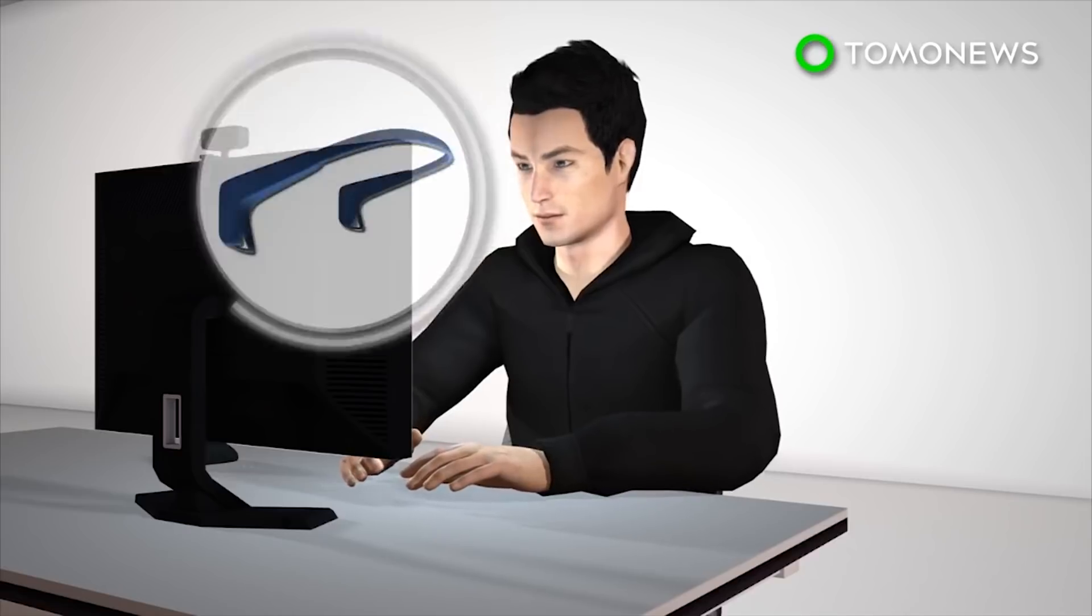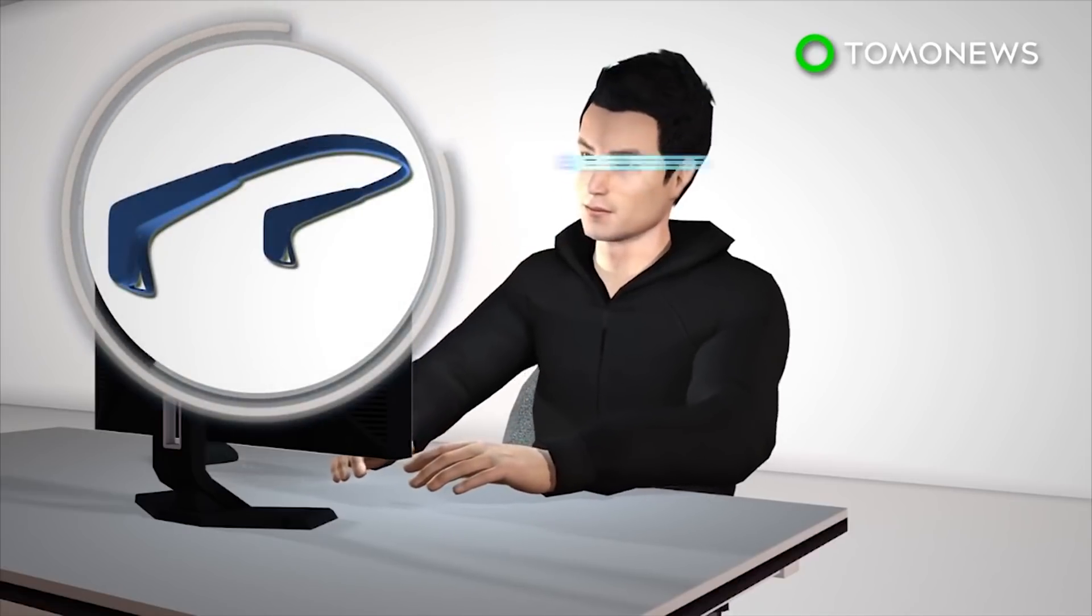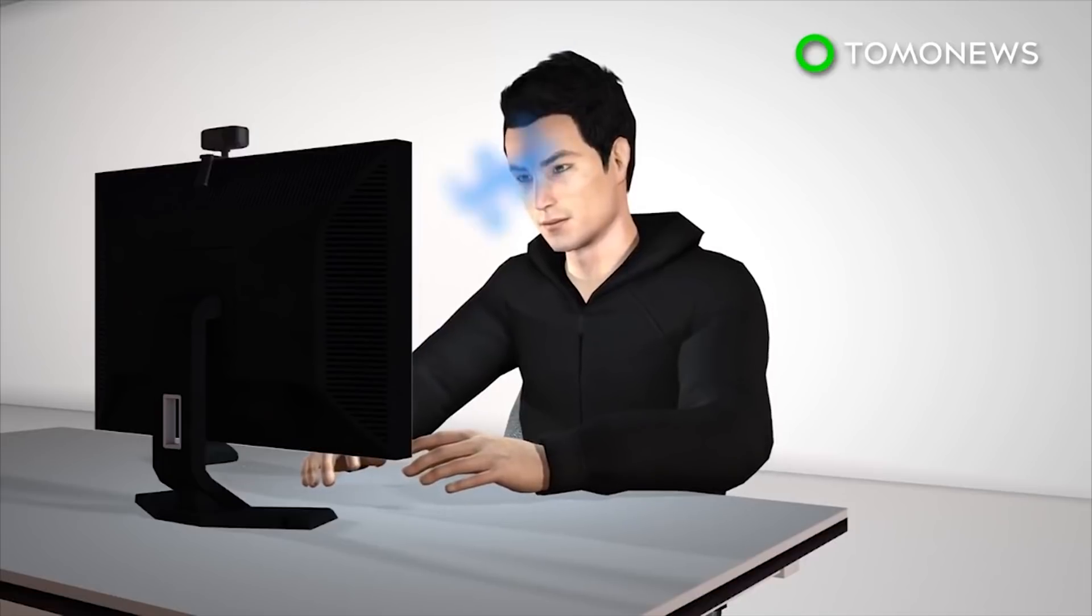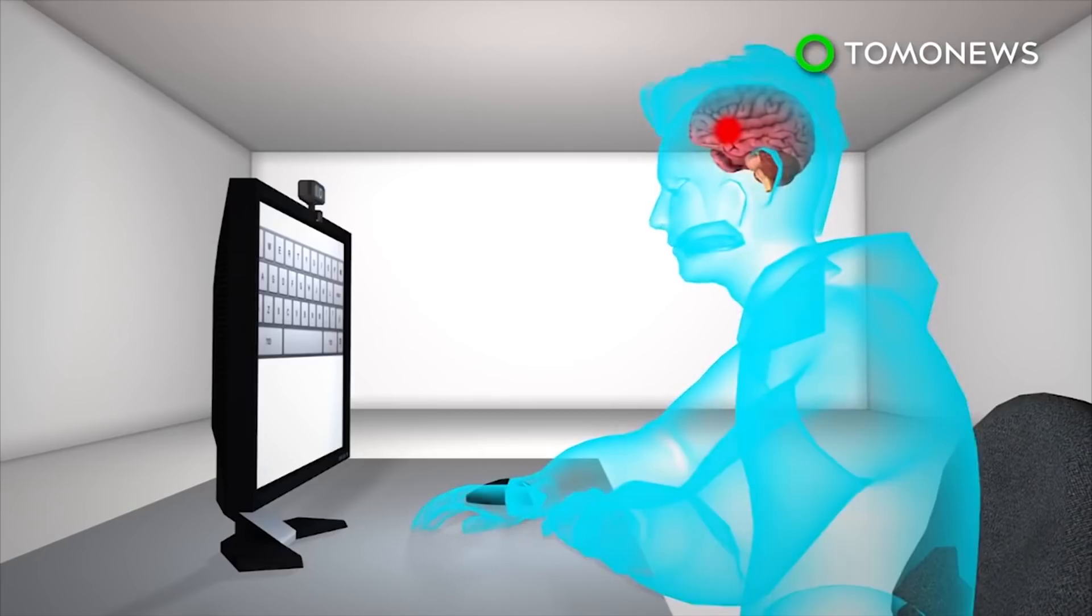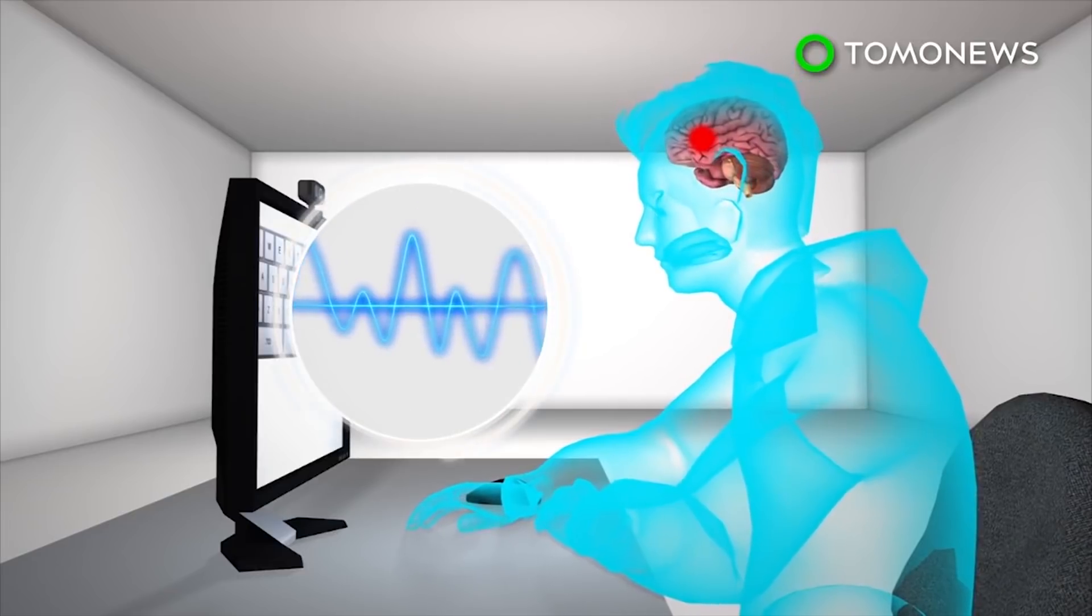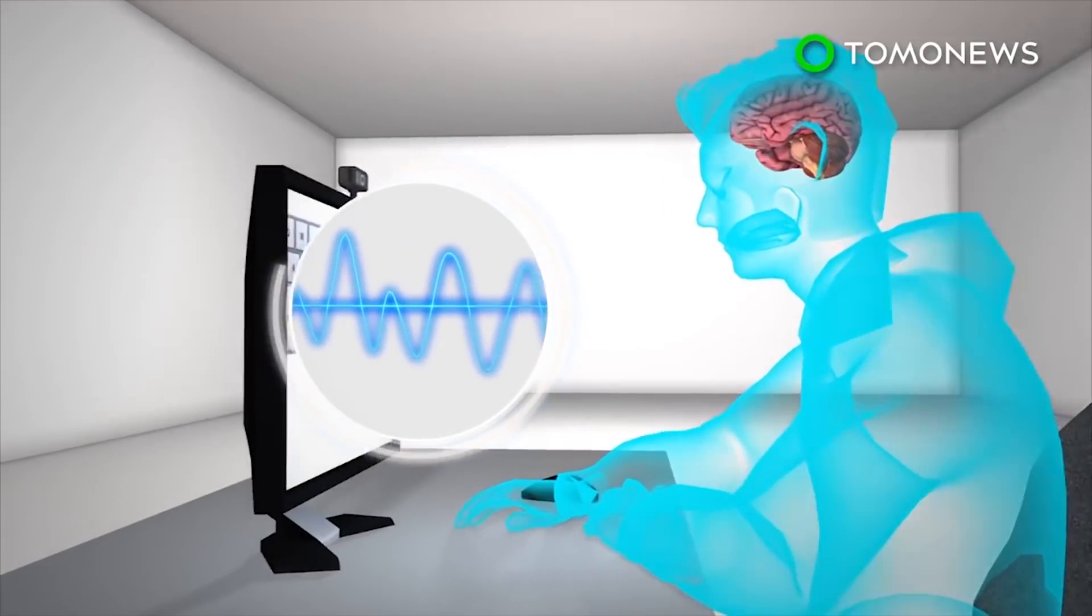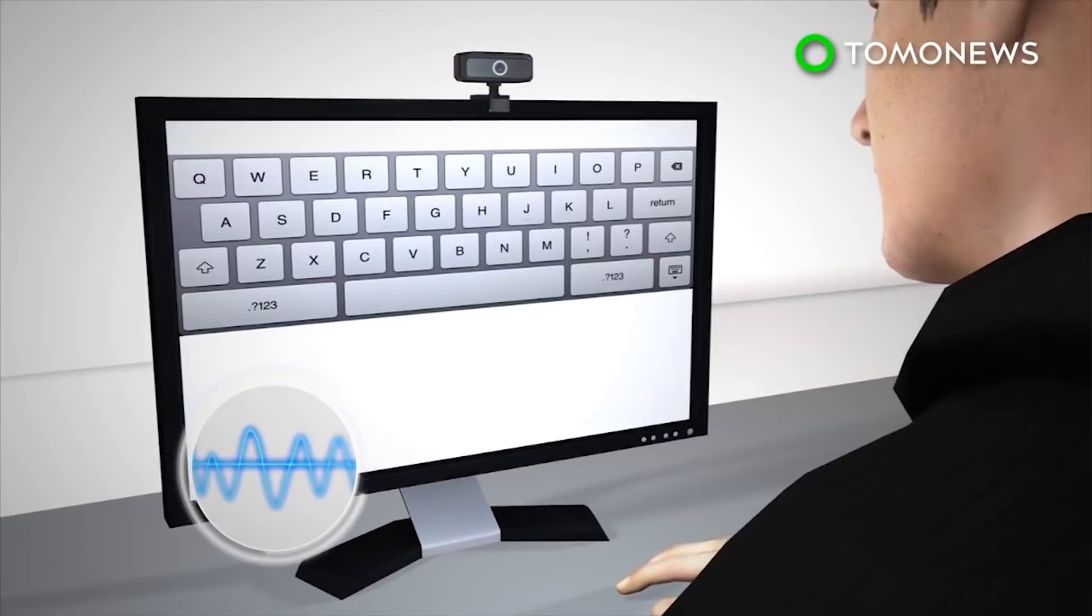Facebook's research group Building 8 is developing a silent speech interface, so users will be able to type with their brains via non-invasive sensors. The technology will tap into the brain's speech center, decoding brain waves and feeding them directly to a computer. The goal is to create a system capable of typing 100 words per minute.